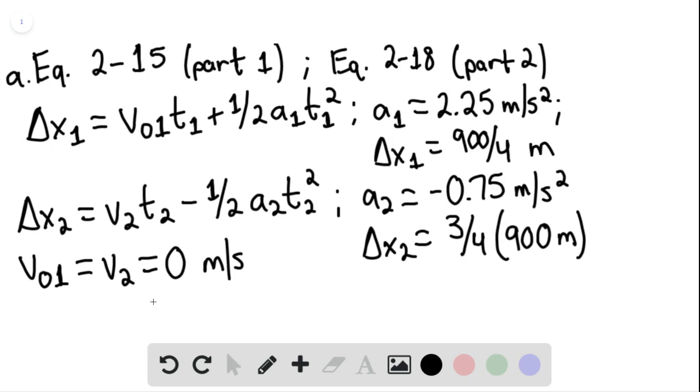T total would be equal to t sub one plus t sub two. After algebraically manipulating and solving for t, we find that the total time is 56.6 seconds. That's a simple algebraic manipulation.